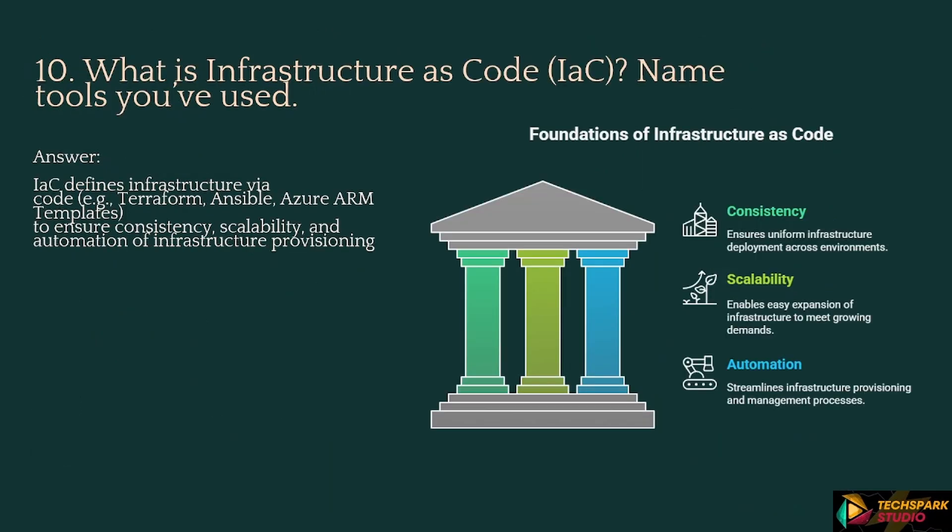Moving on: What is Infrastructure as Code, IaC? Name tools you've used. Response: IaC defines infrastructure via code. Examples include Terraform, Ansible, and Azure ARM templates, to ensure consistency, scalability, and automation of infrastructure provisioning.